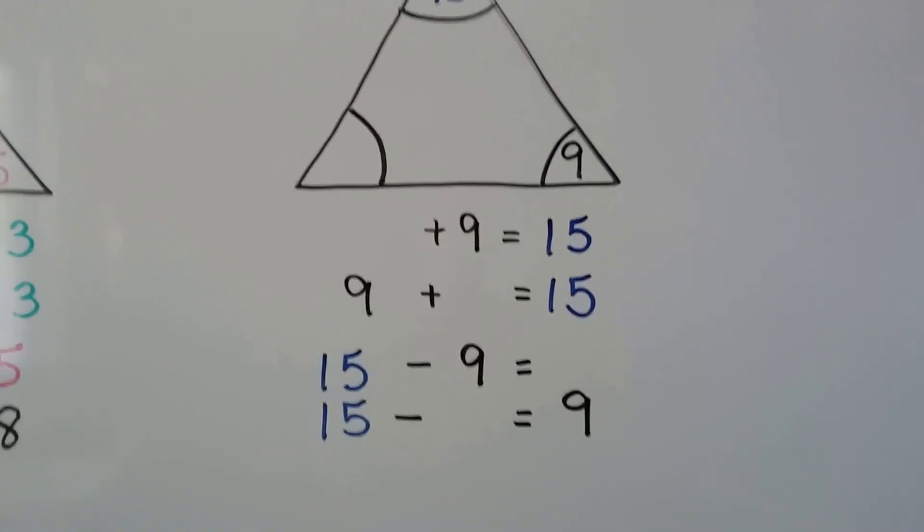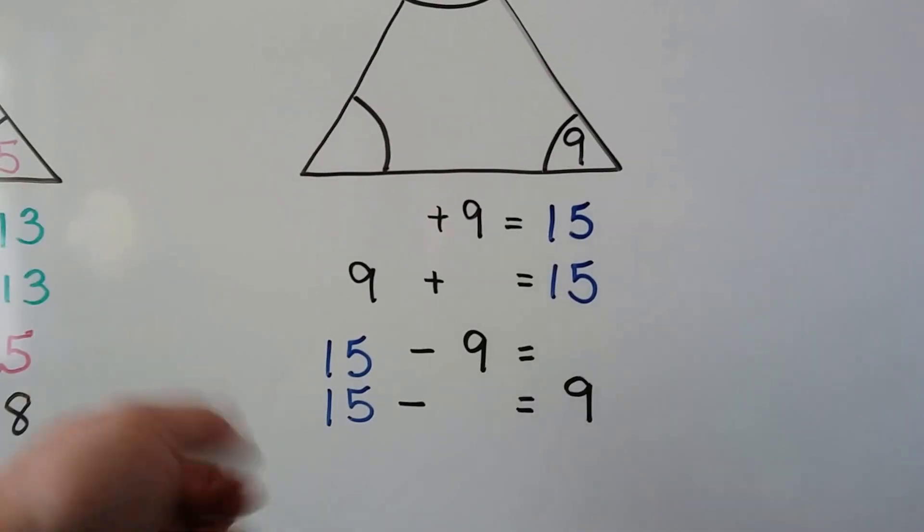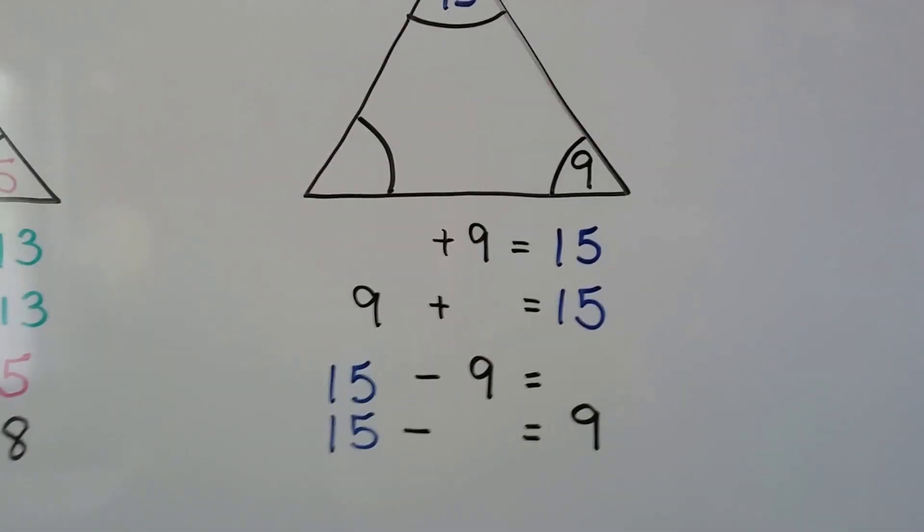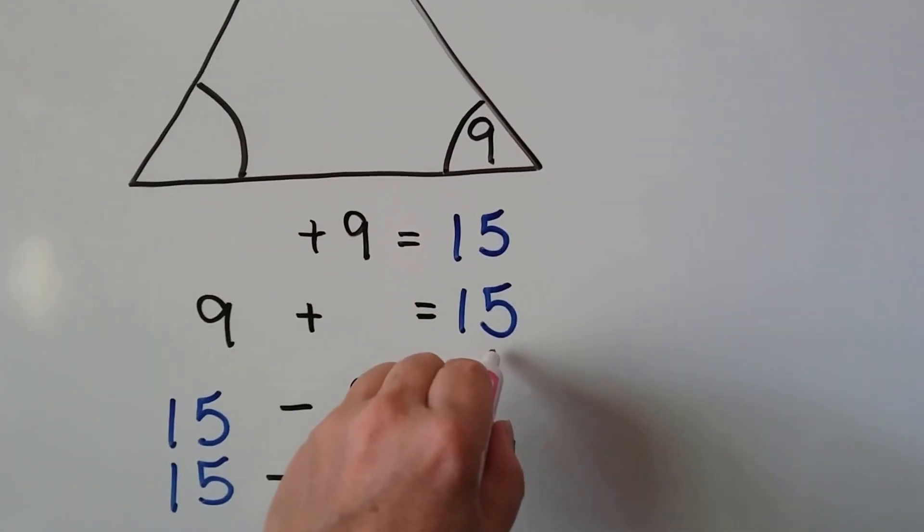So we start at the fifteen and we can count back. Fifteen, fourteen, thirteen, twelve, eleven, ten, nine. That was a six. So we know fifteen minus nine is six. We know our missing fact.